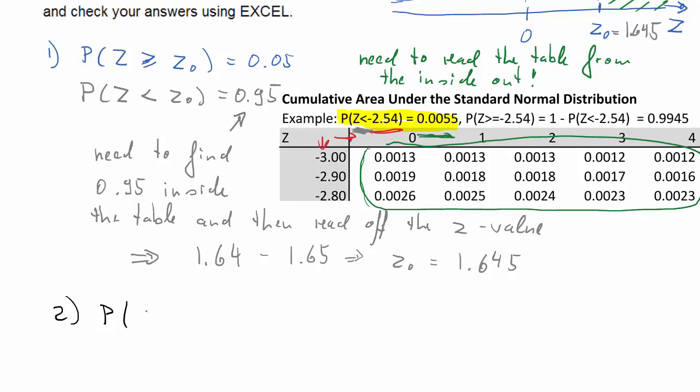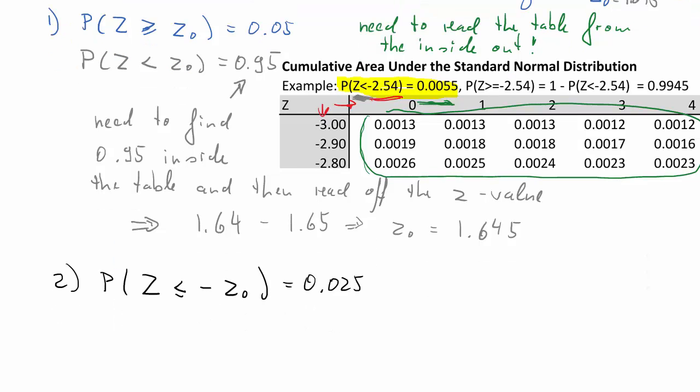Second question. What is the probability that Z is smaller or equal than negative z0? And the probability of that is 0.025, so 2.5%.